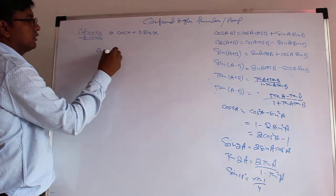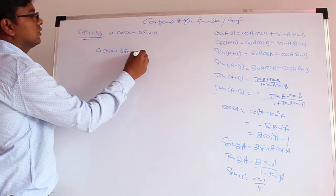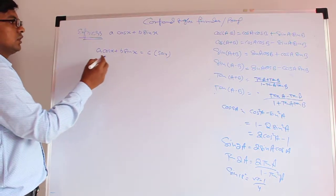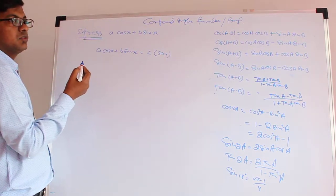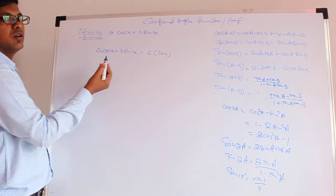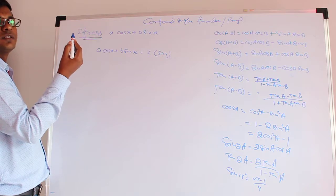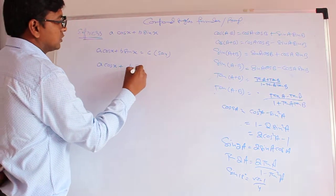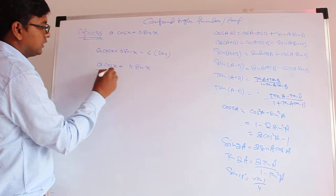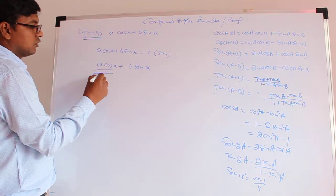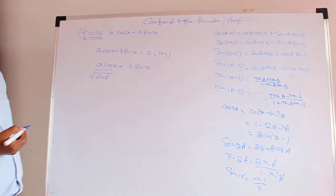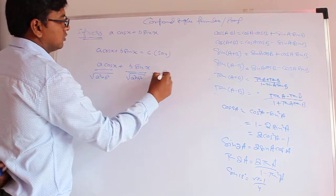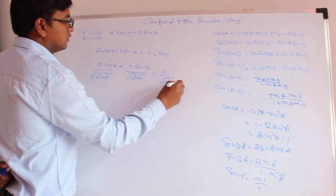We have A cos x plus B sin x equal to C. What we have to do is divide by the square root of the sum of squares of the coefficients of sin x and cos x. So we divide both sides by √(A² + B²), giving C / √(A² + B²) on the right side.